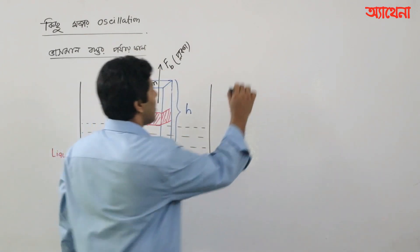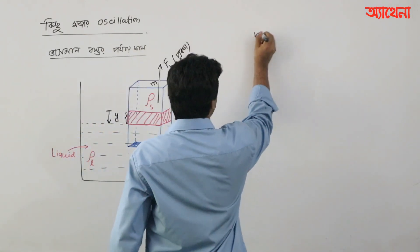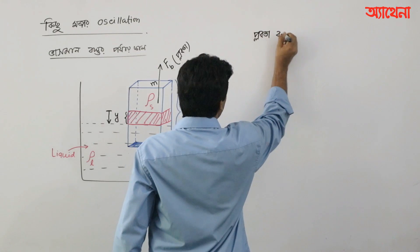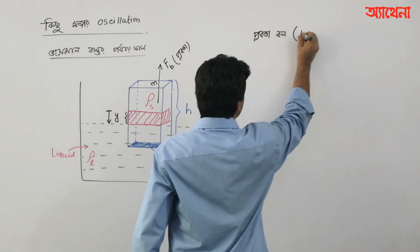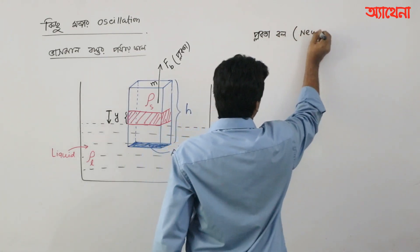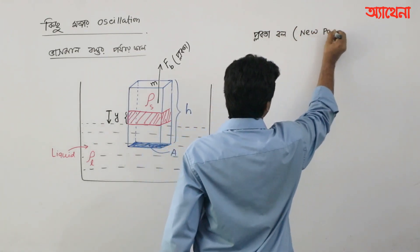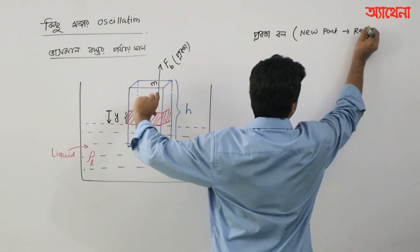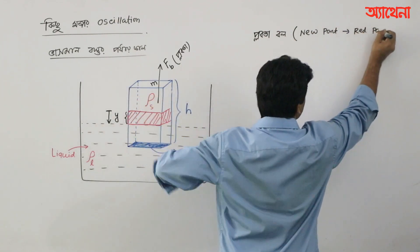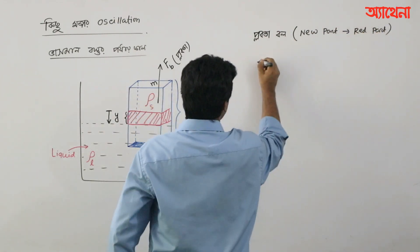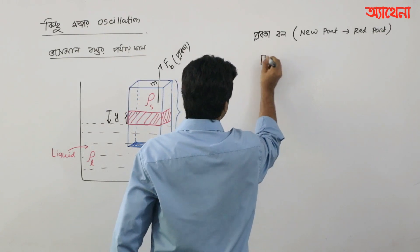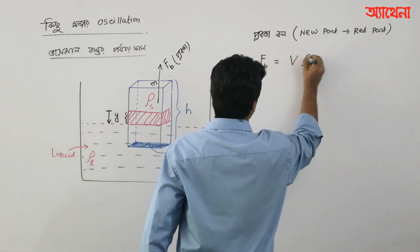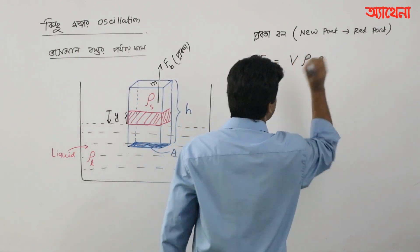So we have a plumb table — just a new part, a new part, a new part, a red part. So we have a plumb table: more than v into rho into g.